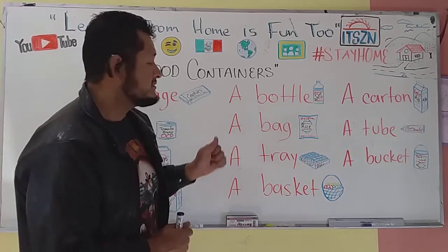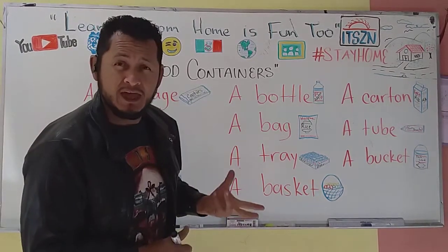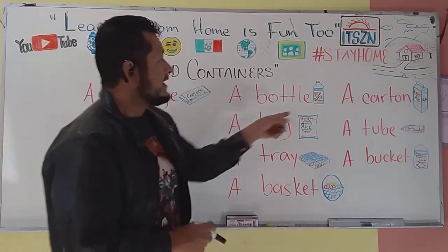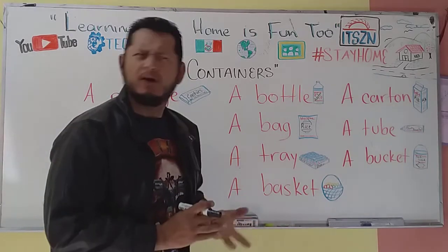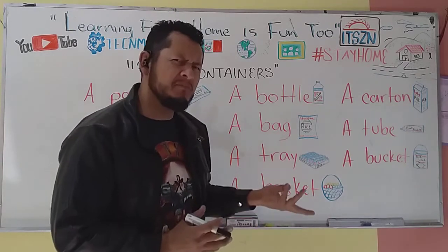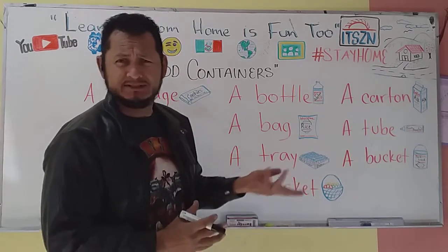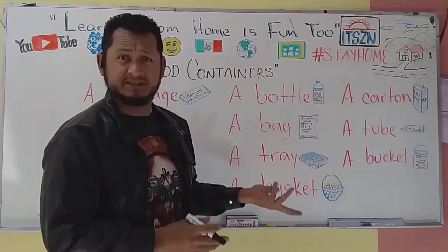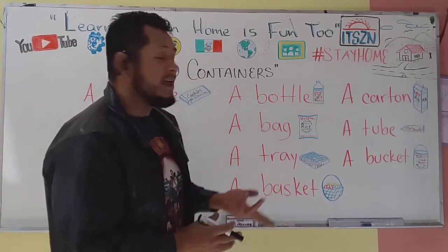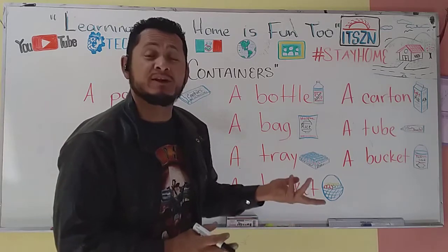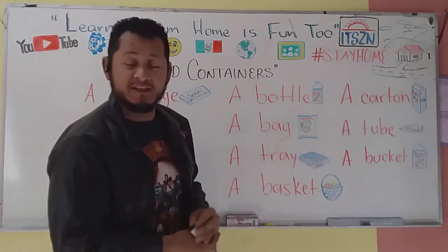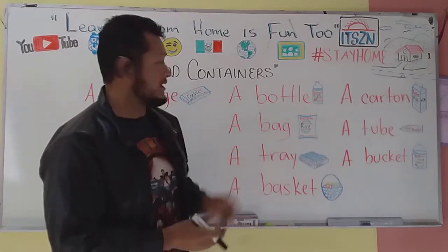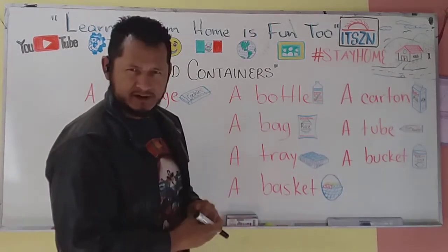A bottle. A bottle significa una botella. It can be made of plastic, or it can be made of glass — puede ser de plástico, puede ser de vidrio. Y también podemos encontrar muchos productos dentro de un bottle.